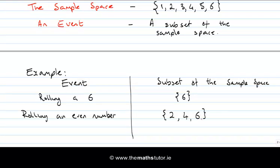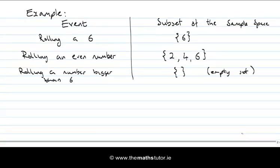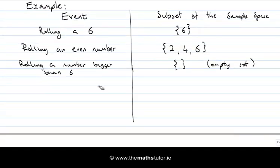What about the event rolling a number bigger than six? That's a funny one, because there doesn't seem to be anything in the sample space that corresponds to that event. In that case, the subset of the sample space is the set with nothing in it—the empty set.